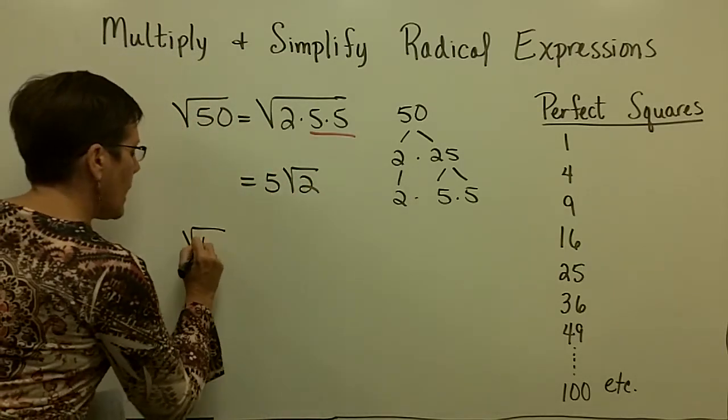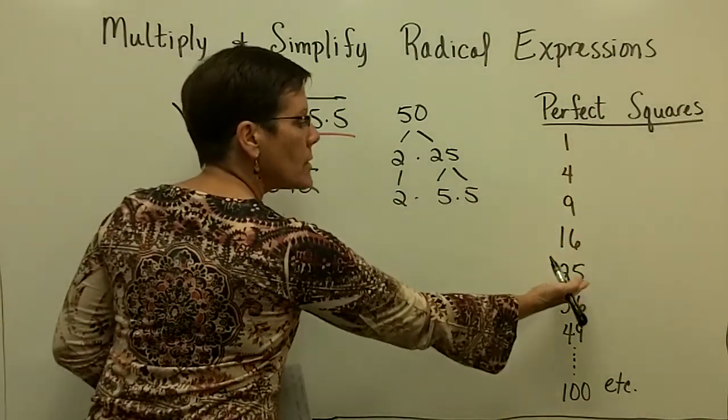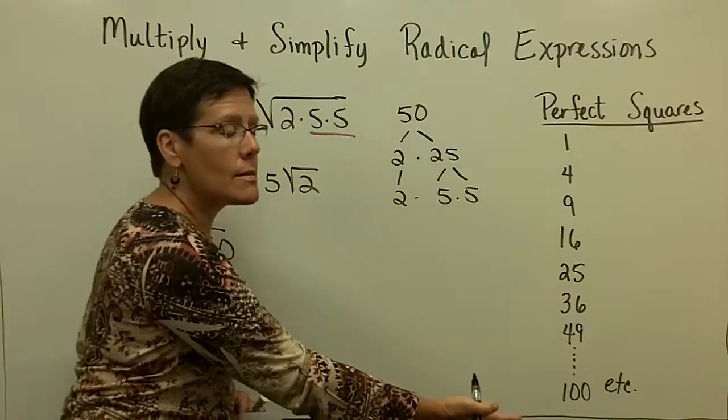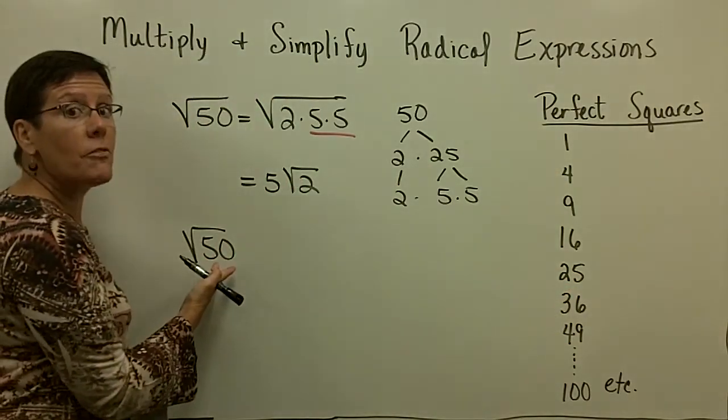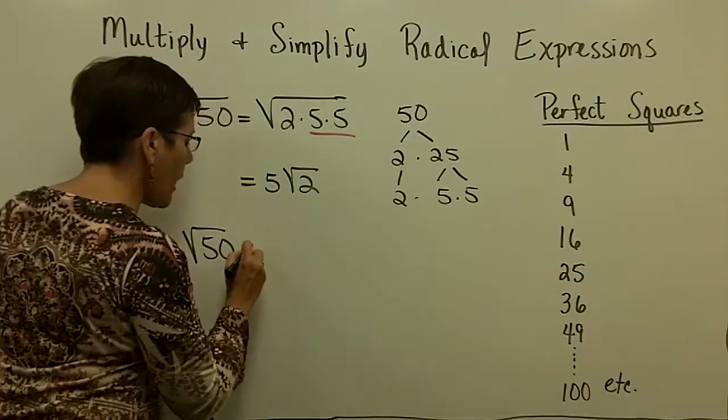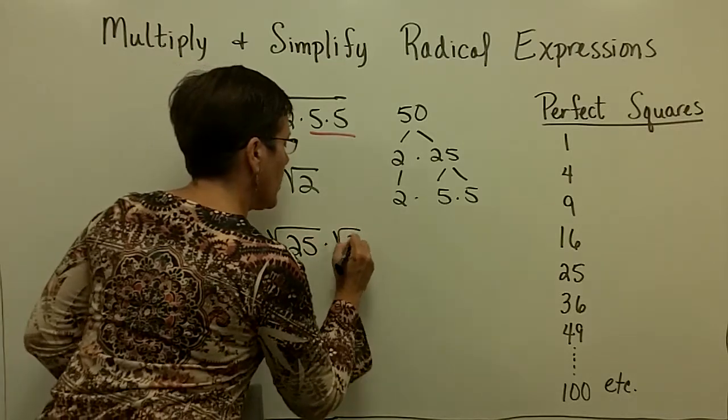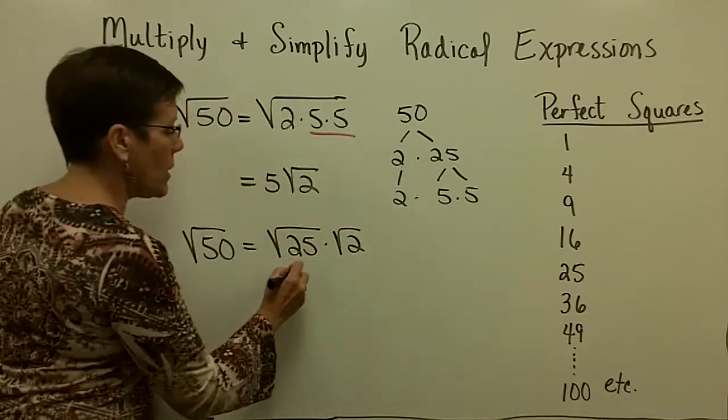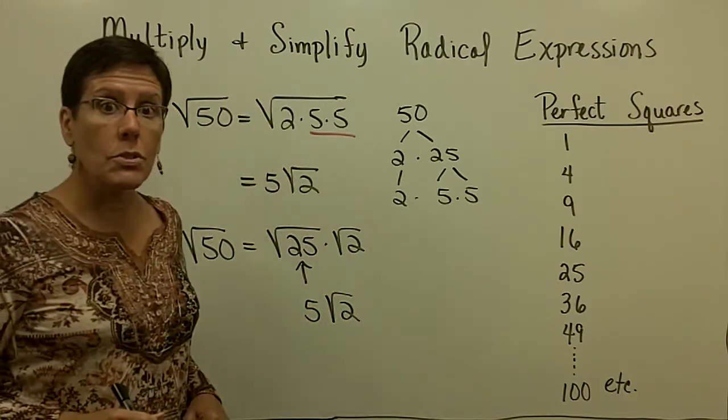Another approach to this problem is to take the number 50, and decide if there is a number in this list, and you want to look for the biggest number in this list, that goes into 50, divides into 50. So just get your calculator out. 50 divided by 25 is twice. And so what you would have is 50 is 25 times 2, and this right here is equal to 5, so you have 5 times the square root of 2.